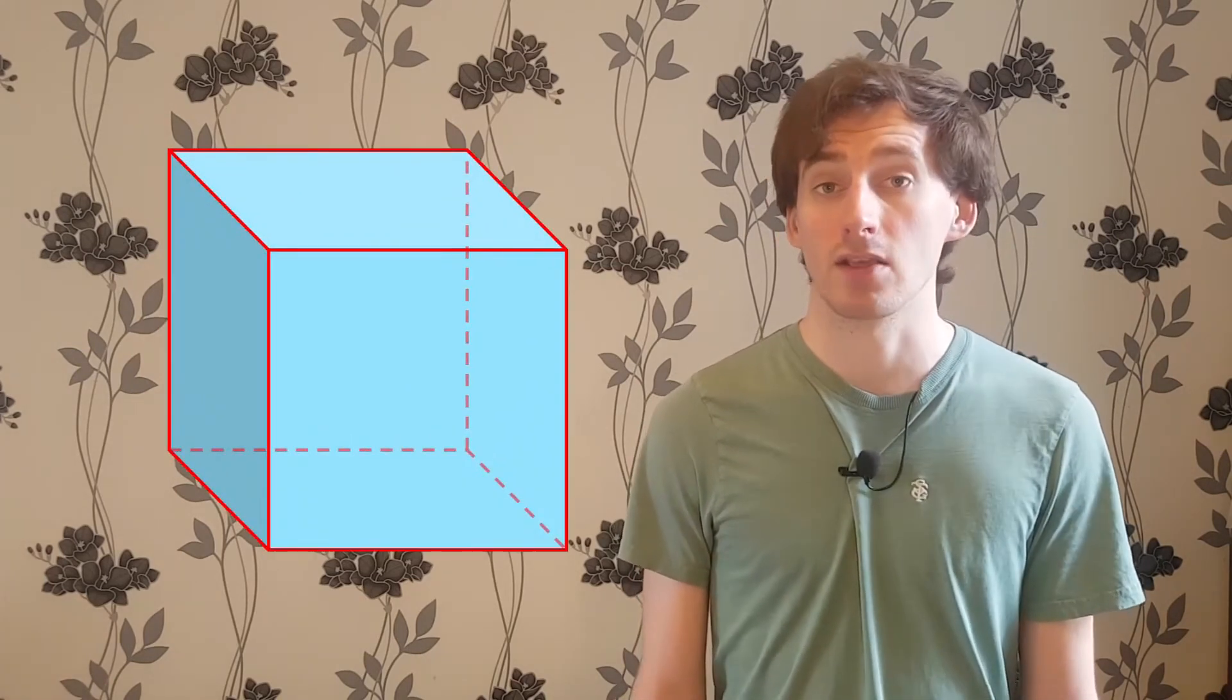When we dualise, you can see that we have swapped corners and faces. So you might expect that if we dualise again, we should swap everything back and return to where we started. Taking the dual of the octahedron, we indeed get the cube, and in fact this always works.